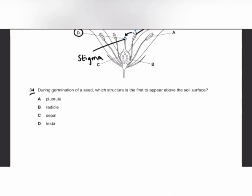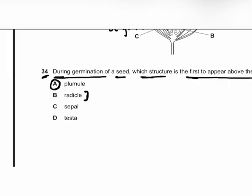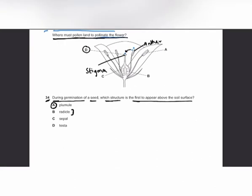MCQ number 34: during germination of a seed, which structure first appears above the soil surface? The radicle grows into roots, so it grows below the soil surface. The plumule is the first structure to appear above the soil surface because it develops into shoots.